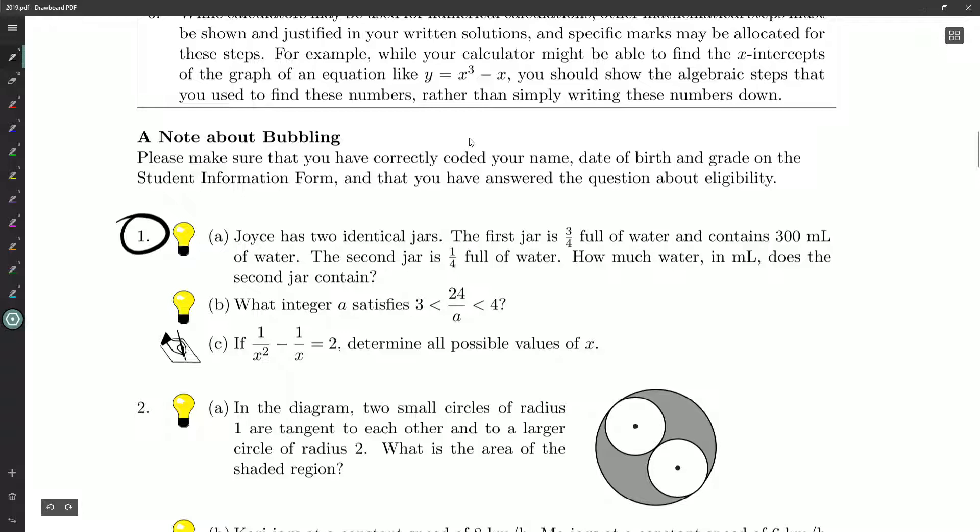We're just going to look at question number one in this video. We've got two light bulbs and then we will have to sort of explain ourselves, show our work and things like that. So part A: Joyce has two identical jars. The first jar is three-quarters full of water and contains 300 milliliters of water. The second jar is one-quarter full of water. How much water in milliliters does the second jar contain?